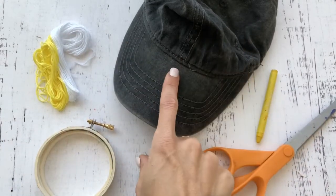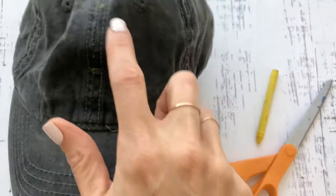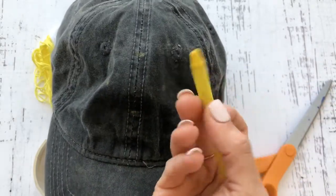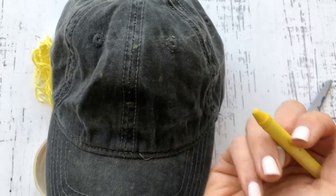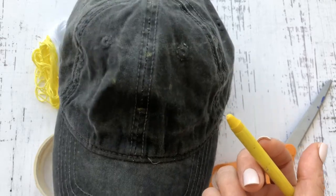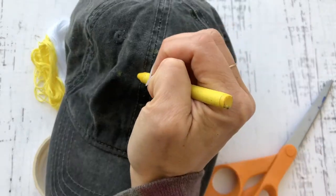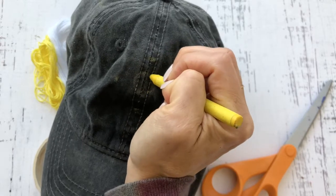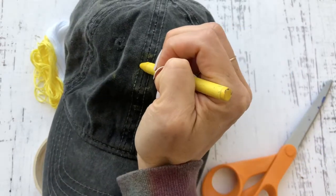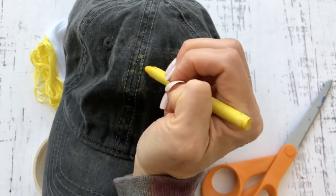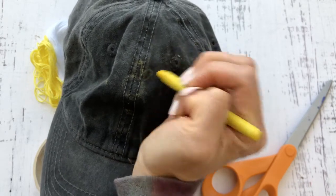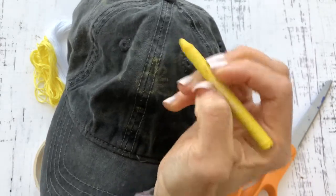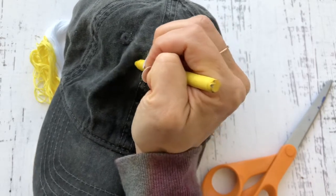We're gonna do a daisy on this hat. I already marked where I want it to go with little yellow dots. I'm just gonna take my crayon and freehand it. If you want to use a pattern, go for it. I'm just gonna lightly draw a daisy and draw my petals. I'm not an artist at all, but having an outline really helps when you're stitching.